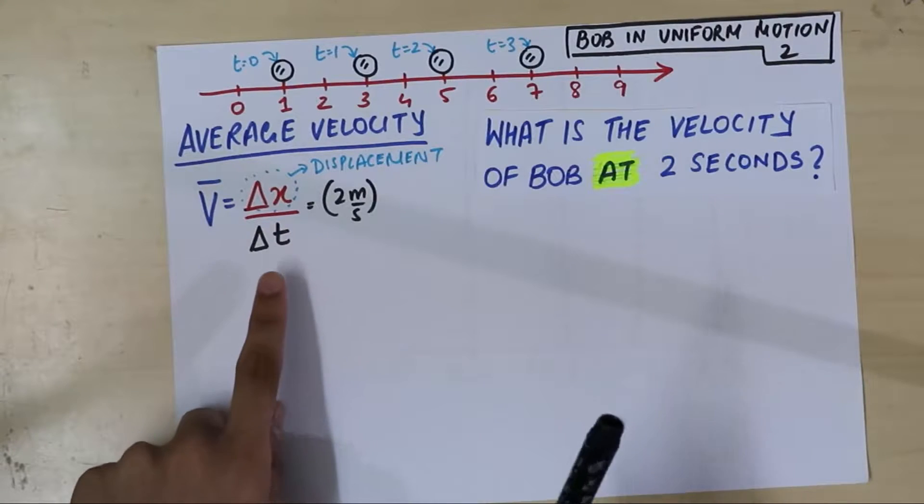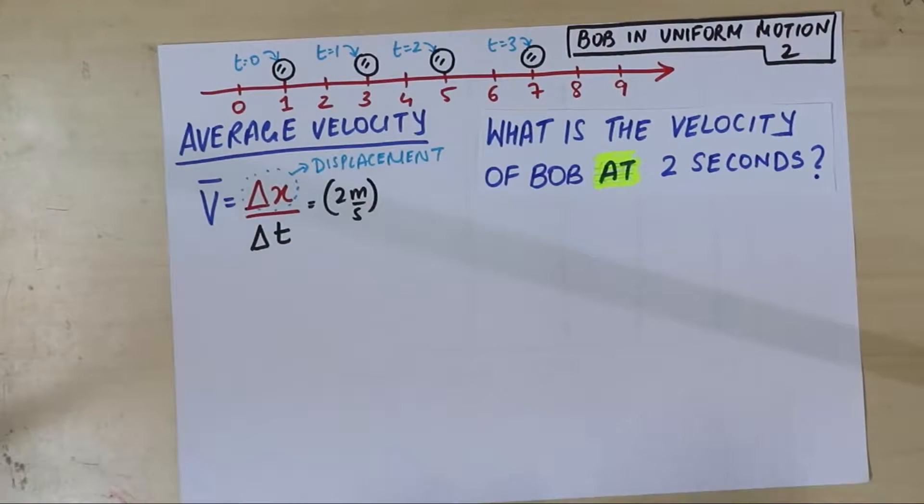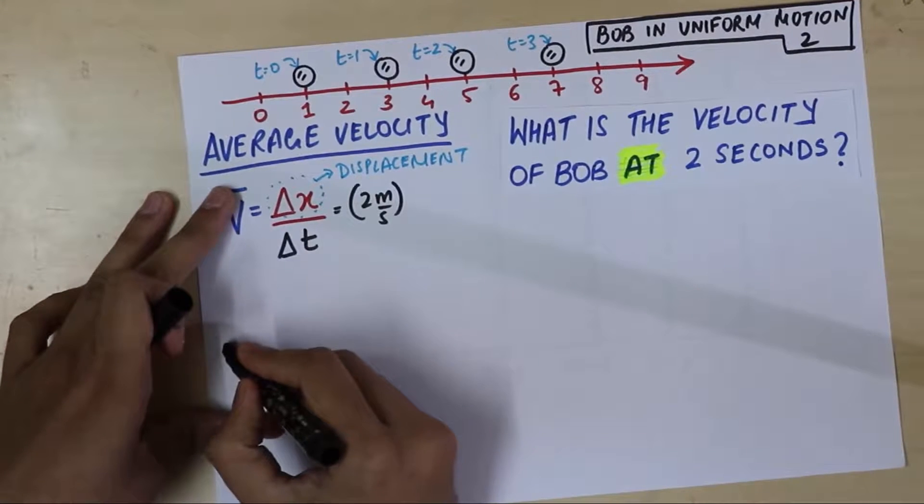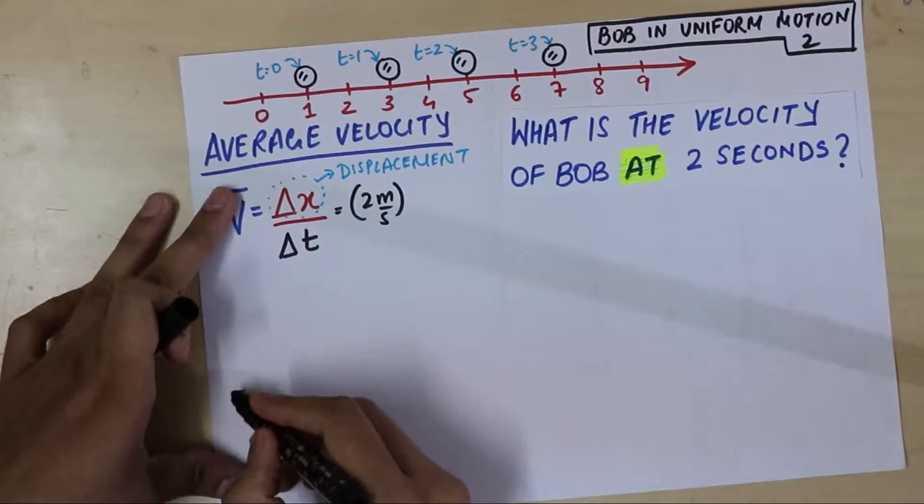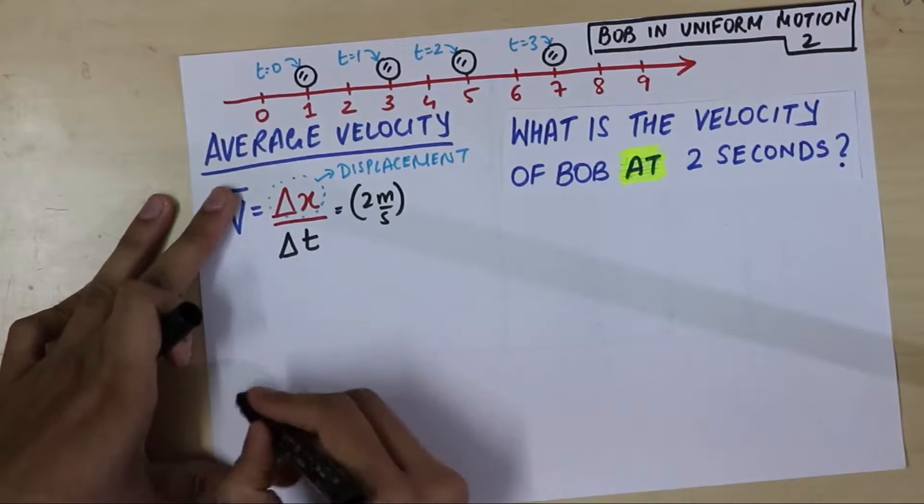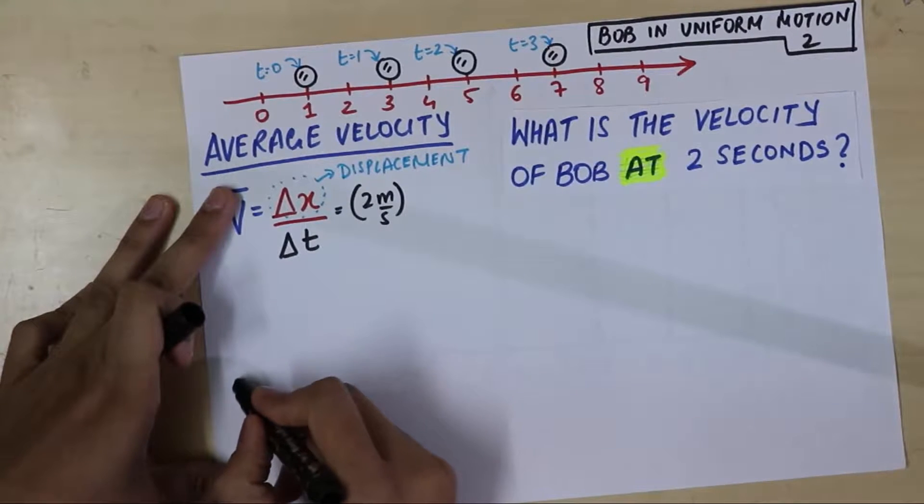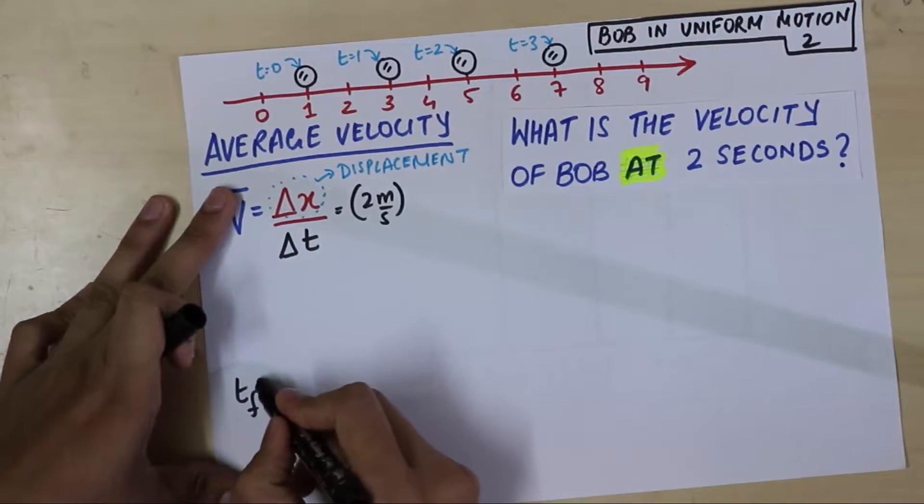So, what is the final time? Well, the final time is t equals 2 seconds. Okay? So, let me write that down here. This is an attempt to solve this, which is going to fail horribly as you'll see. Anyway, it's an attempt. The final time is 2 seconds.